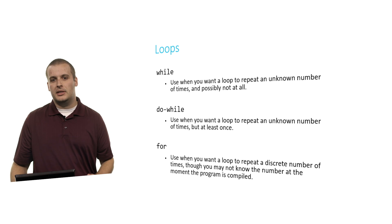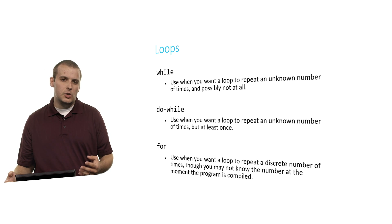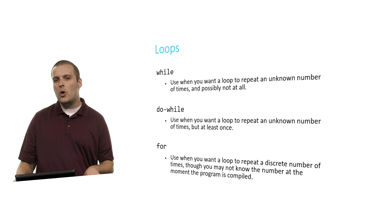And a for loop's use case typically is when you want to repeat a loop a discrete number of times, though you might not know the number of times at the moment the program is compiled. So for example, maybe you have a program where you prompt the user for a number, say. And they enter 100. And maybe your for loop will then in that case run 100 times. Or maybe they enter 1,000, and your program would then run the loop 1,000 times. It's a specific number of times. But you don't necessarily know what that number is the moment the program is compiled. It's not like a while loop where it could be infinite. It's rather a number that you just don't know.